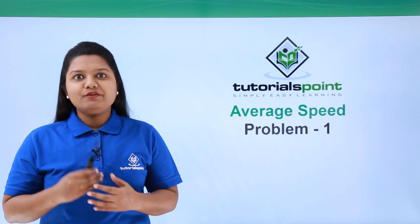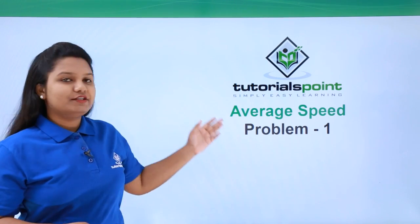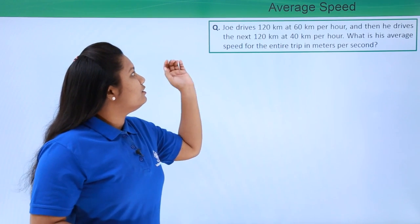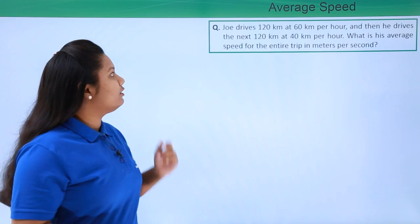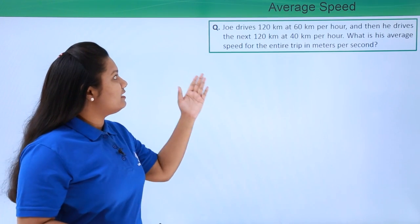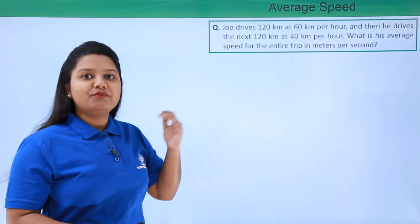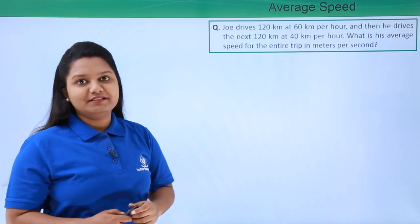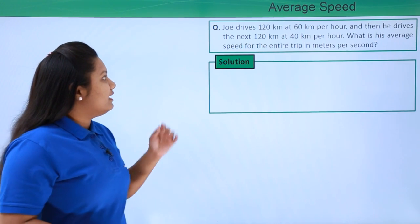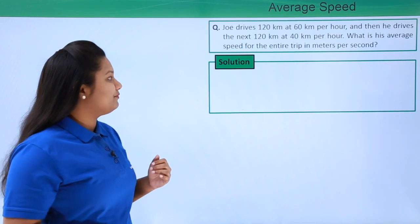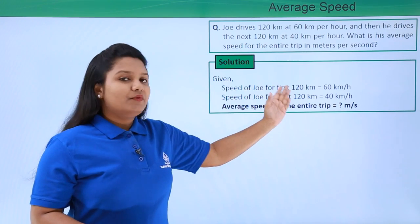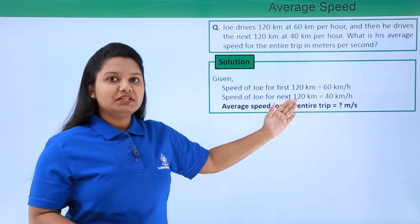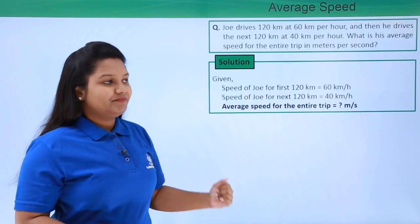Hello everyone. In this video we will be discussing a problem related to average speed. The problem reads: Joe drives 120 kilometers at 60 kilometers per hour, and then he drives the next 120 kilometers at 40 kilometers per hour. First, let us write what is given — his speed for the first 120 kilometers was 60 km/h and for the next 120 kilometers was 40 km/h.